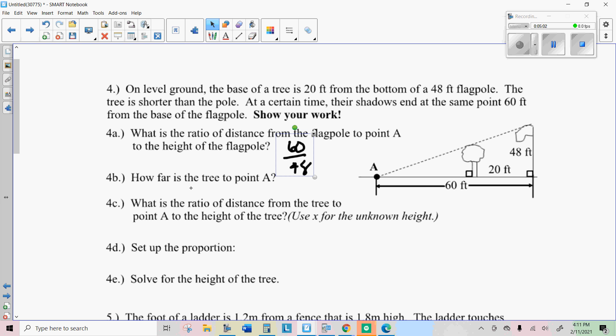And then it says how far is the tree to point A. The tree to point A is only part of this sixty foot distance, which is sixty minus twenty is forty. The ratio of the distance from the tree to the height of the tree then is forty, and the height of the tree, we're going to use X for that. So I'll just put an X there. So our proportion will look like this: sixty over forty-eight equals forty over X.